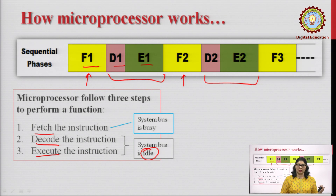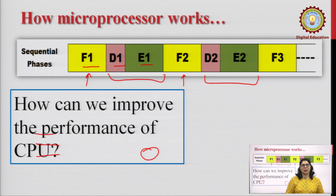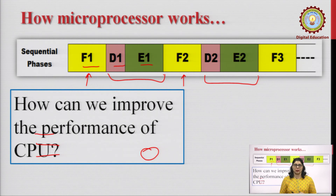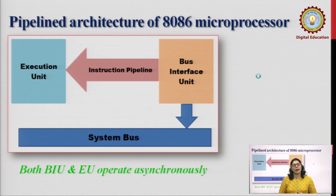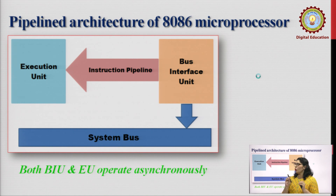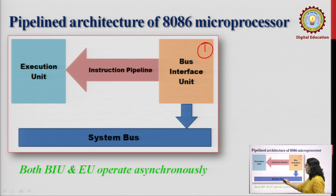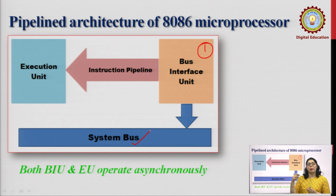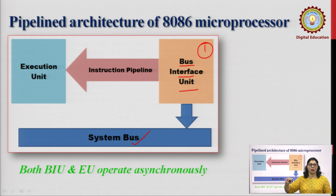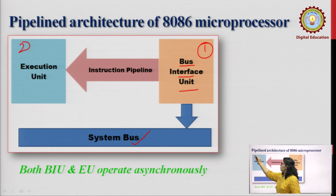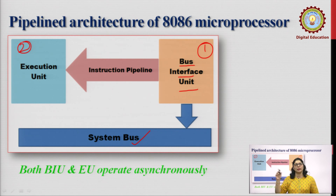The frequency of the 8085 microprocessor was 3 megahertz. Now the question arises: how can we improve the performance of the CPU? For this, the 8086 microprocessor architecture was divided into two parts. The first unit was made to interface with the system bus and perform only fetching. This is the Bus Interface Unit (BIU), whose job is to fetch data from memory locations. The second part is the Execution Unit (EU), whose job is only decoding and execution.